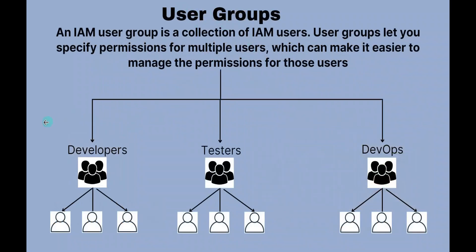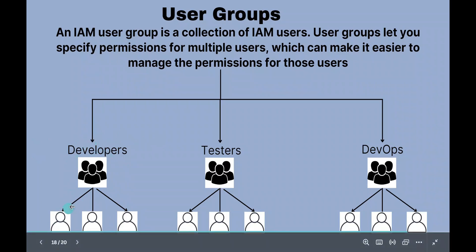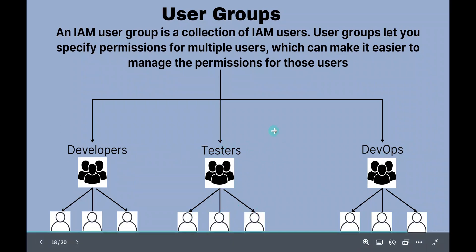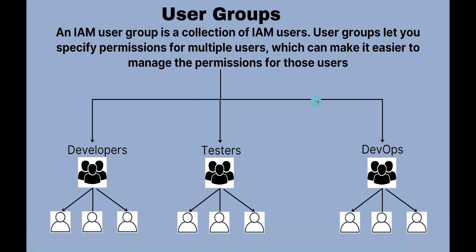The next concept is user groups. Let's imagine you have three developers on your team. When creating a user for each developer, you'd essentially need to give the same access to each one. Instead of redefining that access each time, you create a user group called 'developers,' define the access once, and then add each user to this group. All those developers will have the same access, and it's easier to add or revoke privileges using the group. You can have various groups like testers, DevOps, and add any number of users to these groups.